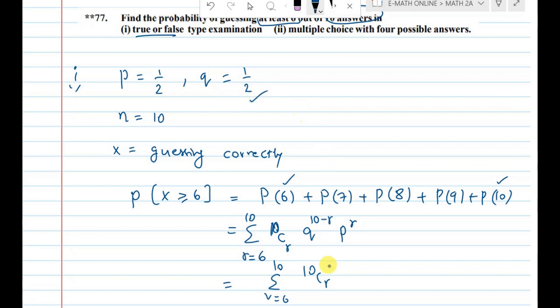So sigma r equal to 6 to 10, 10Cr. Q is 1 by 2, right? So 1 by 2 power 10 minus r, 1 by 2 power r.